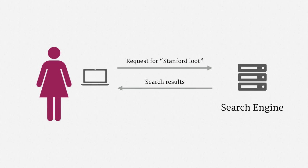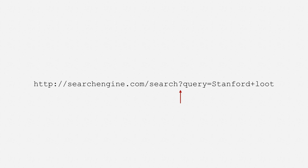Alternatively, Alice might request a dynamic web page. Imagine Alice wants to know where Stanford keeps its valuables. She might run a web search — say, for Stanford Loot — and a search engine would provide a response. The URL for the search results page might look something like this. Note the question mark in the middle of the URL. That's commonly used to separate a list of parameters that the user has provided. Here, it's a search query for Stanford Loot.